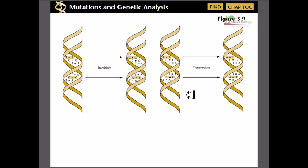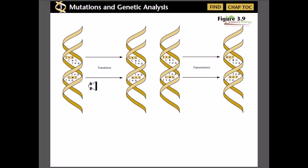Welcome friends. In this video we will be talking about a simple type of DNA mutation called transitions and transversions. Both of these fall in the category of point mutation. A point mutation means when any change in DNA happens at a particular nucleotide, rather than a whole region of DNA. Each nucleotide is a single point, and any mutation on those nucleotides is called a point mutation.